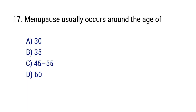Question number 17. Menopause usually occurs around the age of? The right answer is option C: 45 to 55.